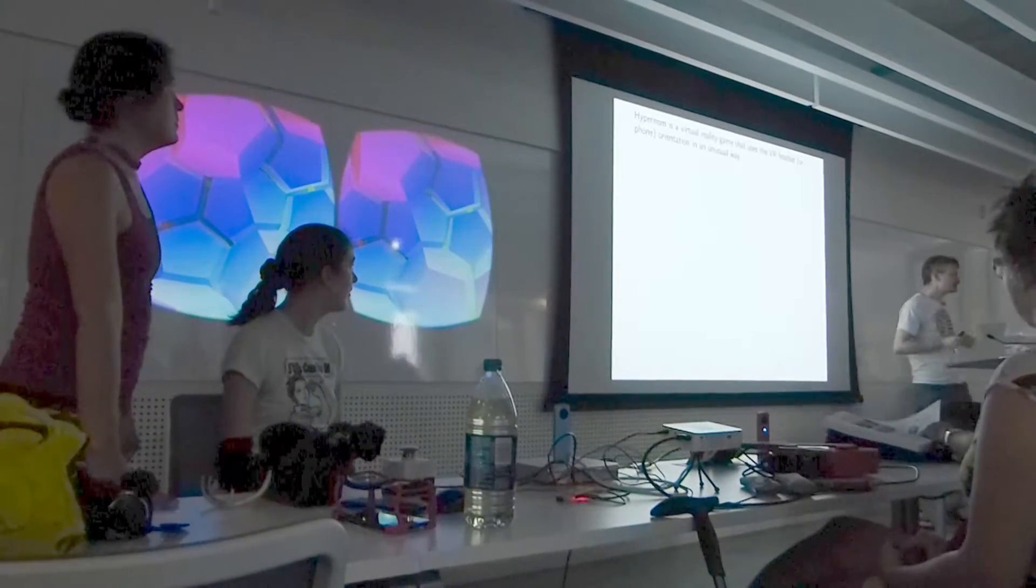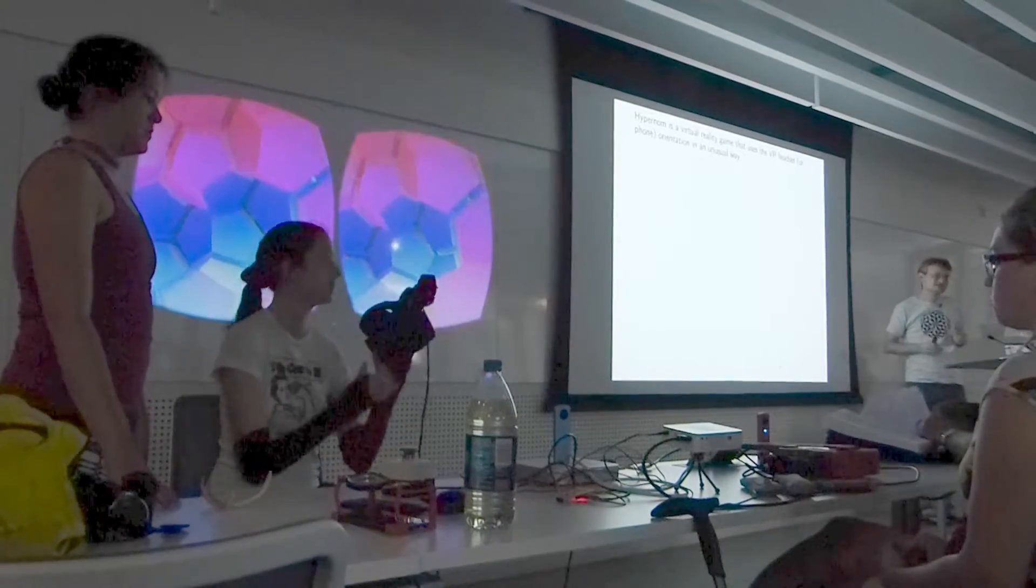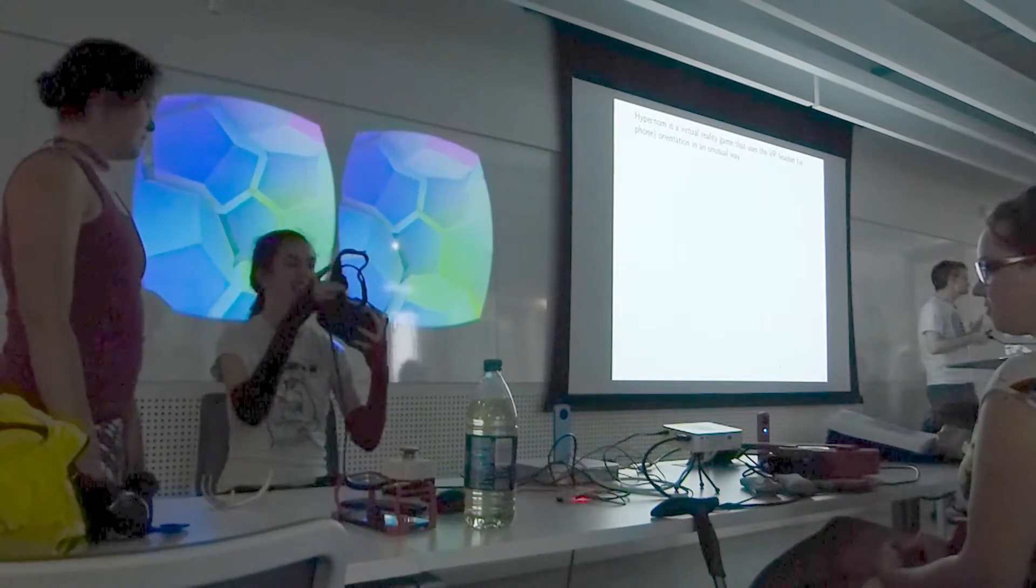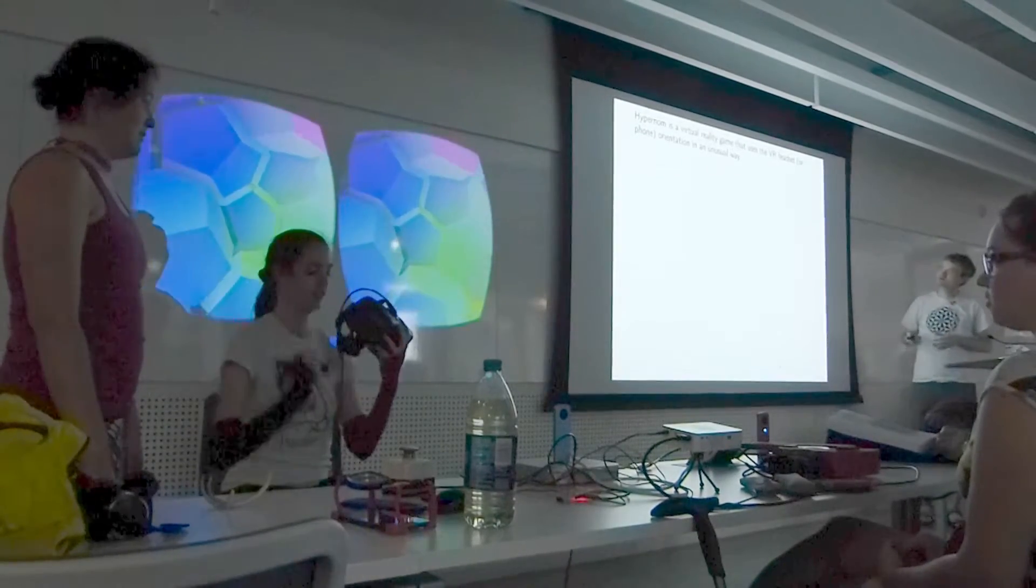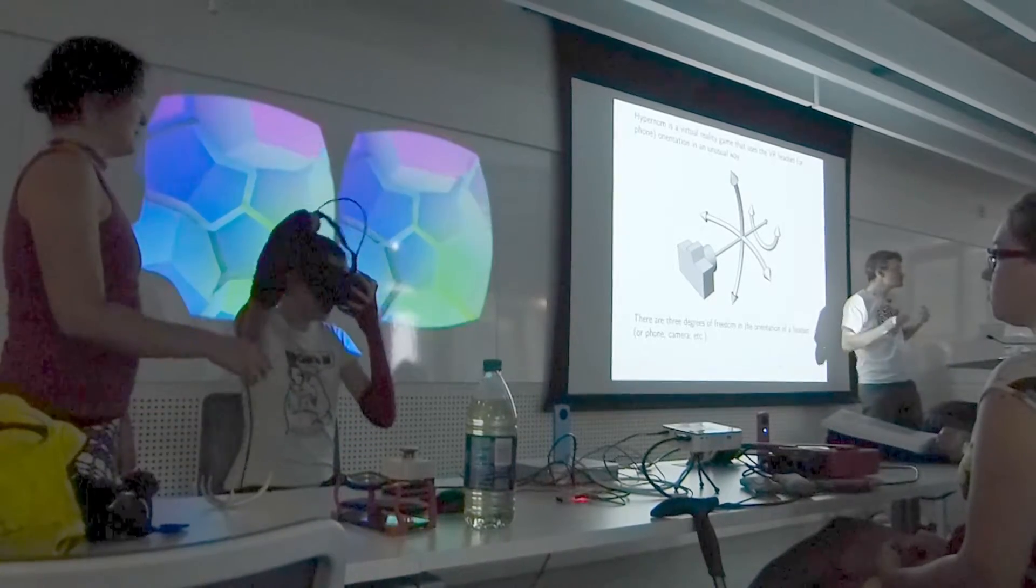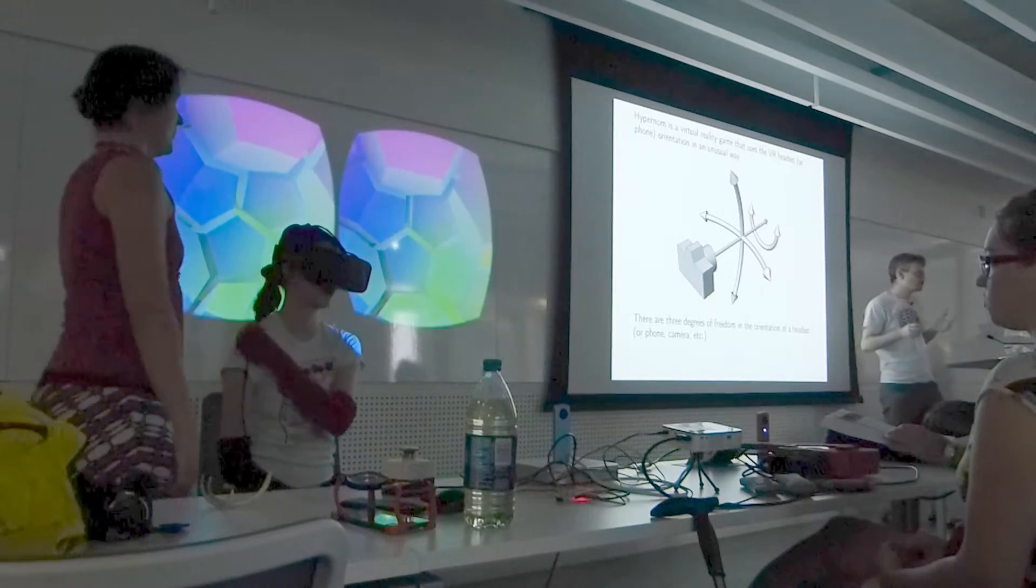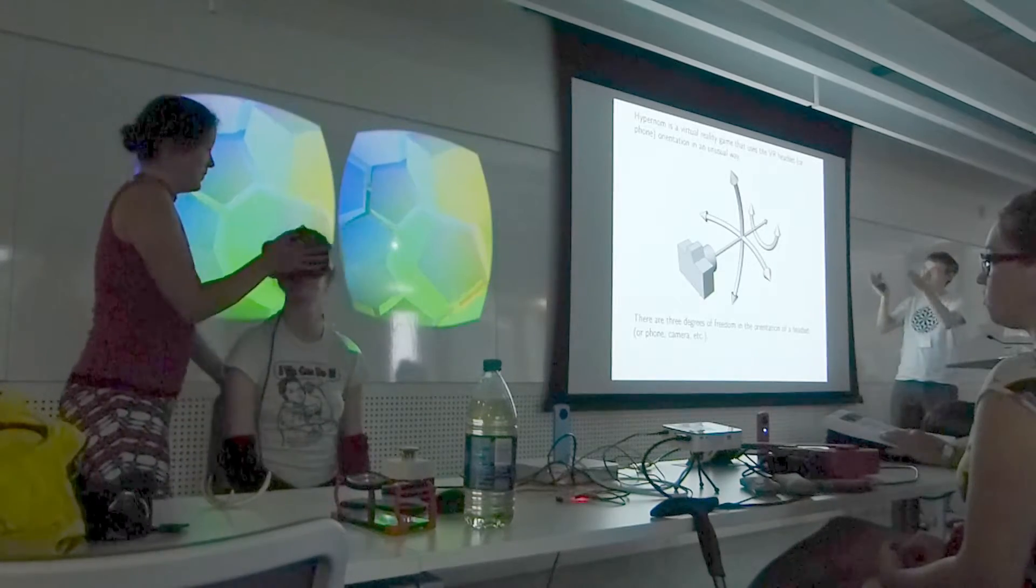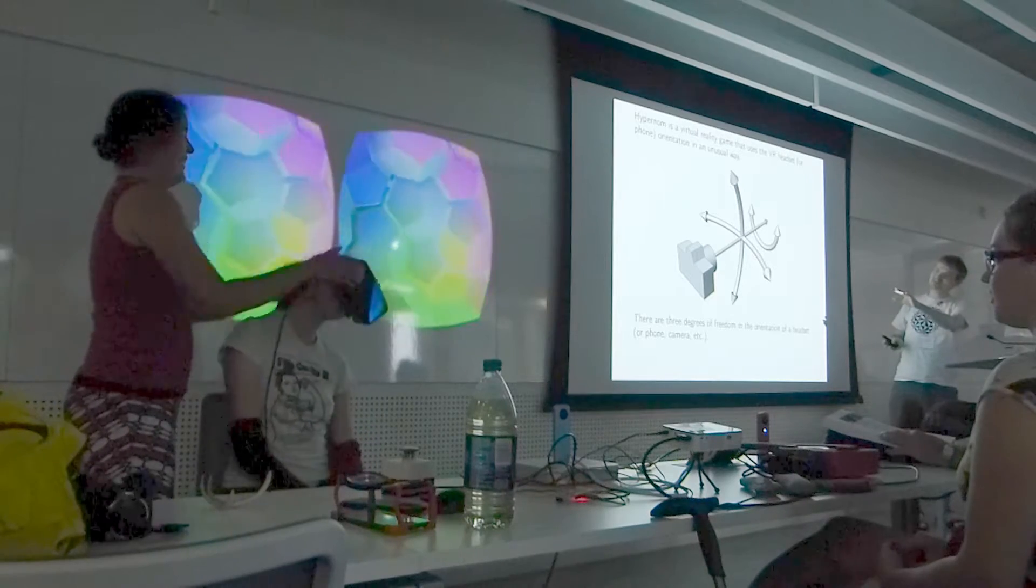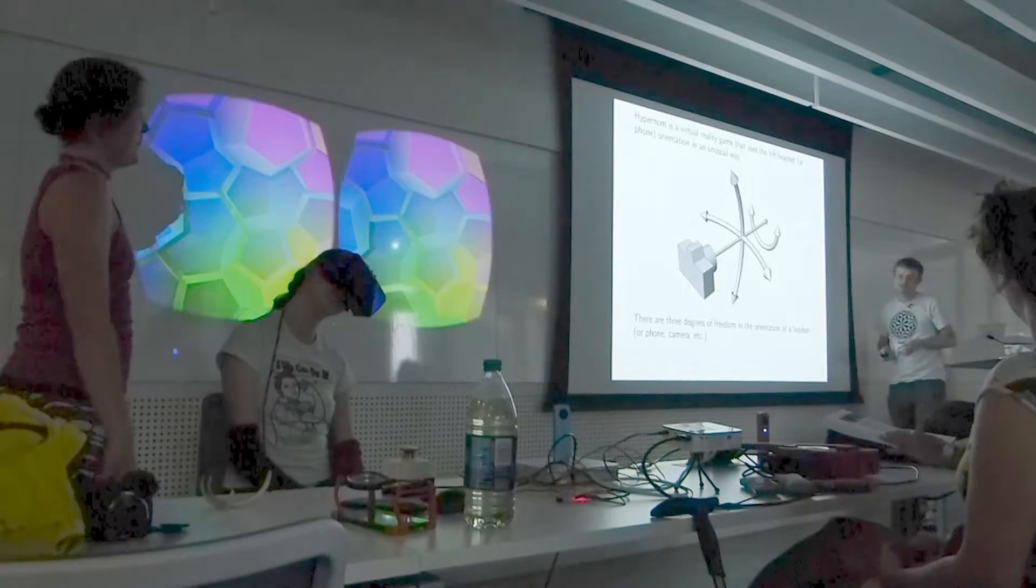HyperNOM is a virtual reality game that uses the VR headset in an unusual way. The usual way the VR headset is used is you turn your head and it rotates the camera so you're seeing a different part of the virtual scene. We're doing something else. We're using the movement of the headset to move you through the space. There's three degrees of freedom in the orientation of a headset. You can go side to side, you can go up and down, and you can roll. Rotating Vi's head rotates the camera and you're moving through the space in some way.